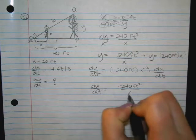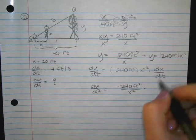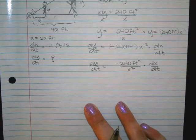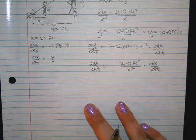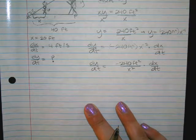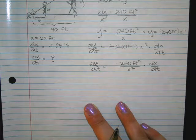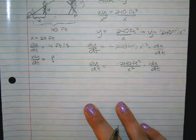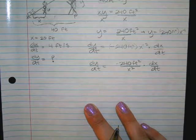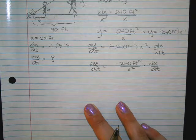So we need the dx/dt on the end. Okay, so I'm going to clean this problem up a little bit. dy/dt is negative 240 feet squared divided by X squared, and then it's being multiplied by dx/dt. So the hardest part of this problem was setting up that proportion. Once you set up that proportion, you are good to go through the rest of the problem.